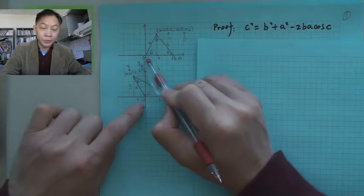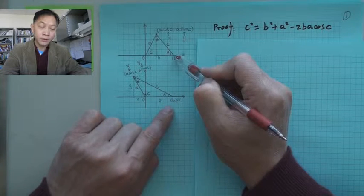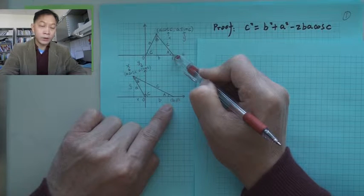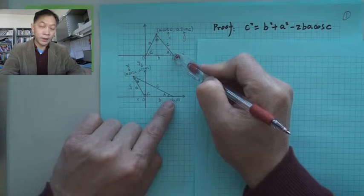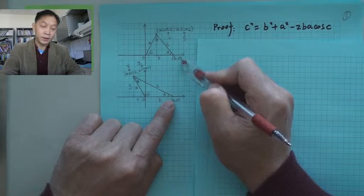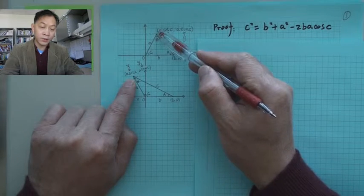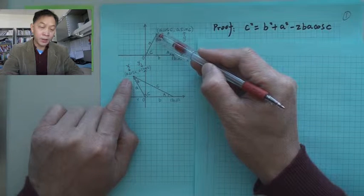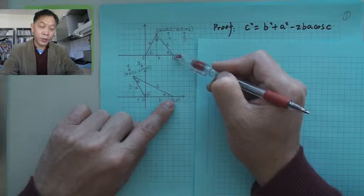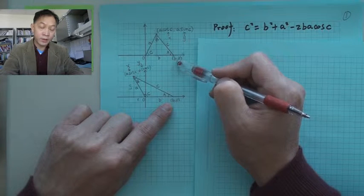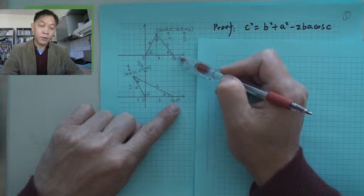Now let's see how to prove that. In order to prove it, we want to put vertex C on the origin and vertex A on the x-axis. So C is at (0, 0). This side is the opposite side of vertex B, so it is denoted by little case b, and vertex A will have coordinates (b, 0), because b is the x-coordinate and zero is the y-coordinate since this point is on the x-axis.